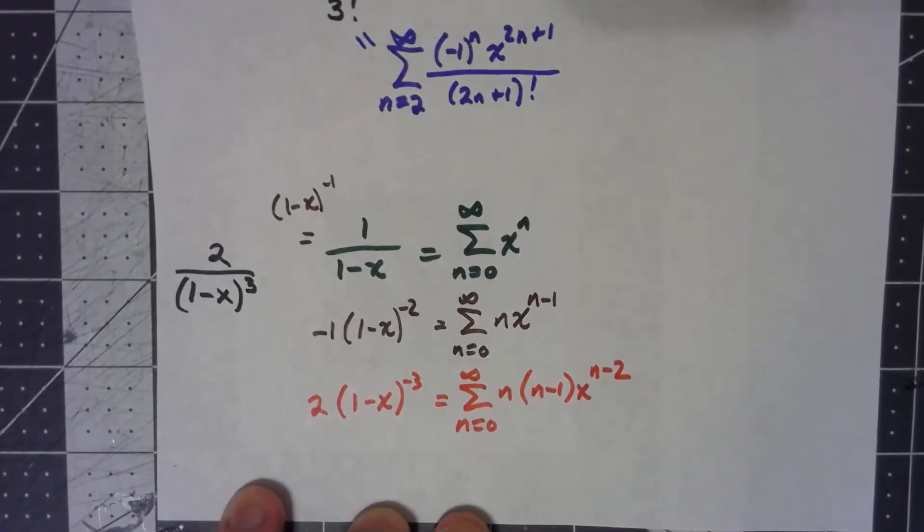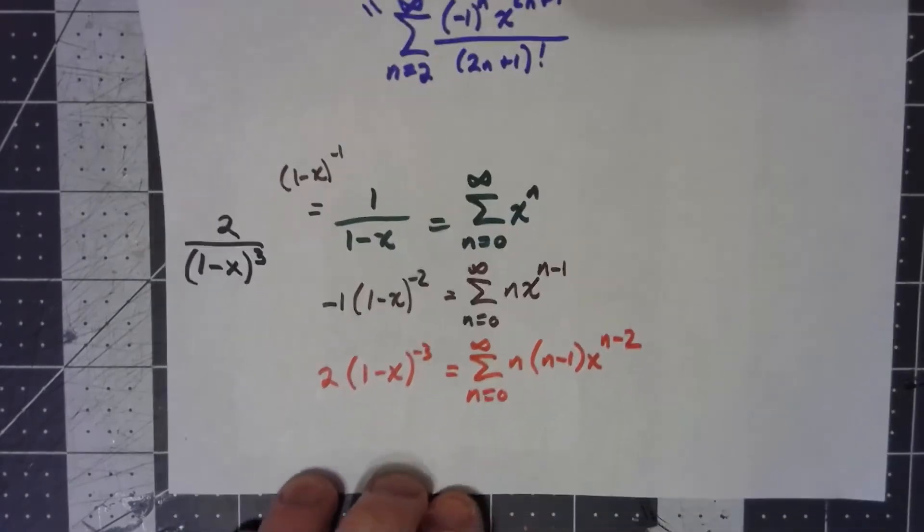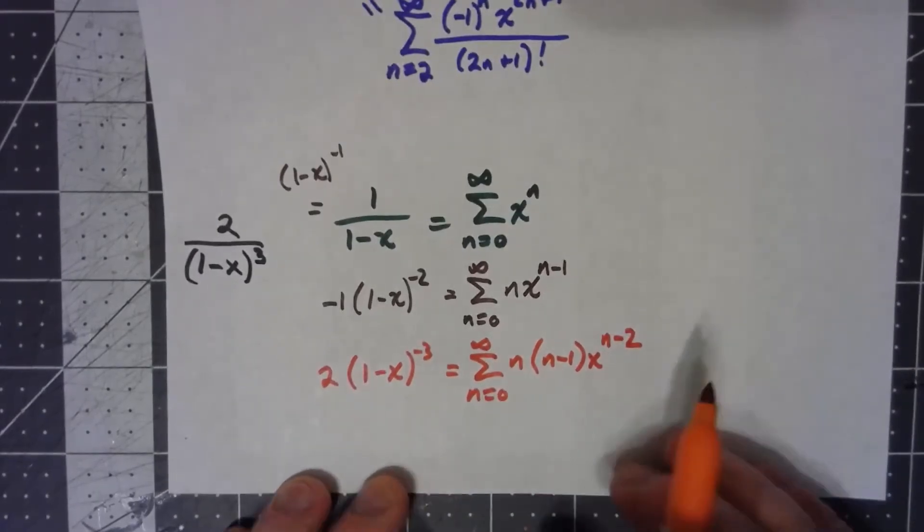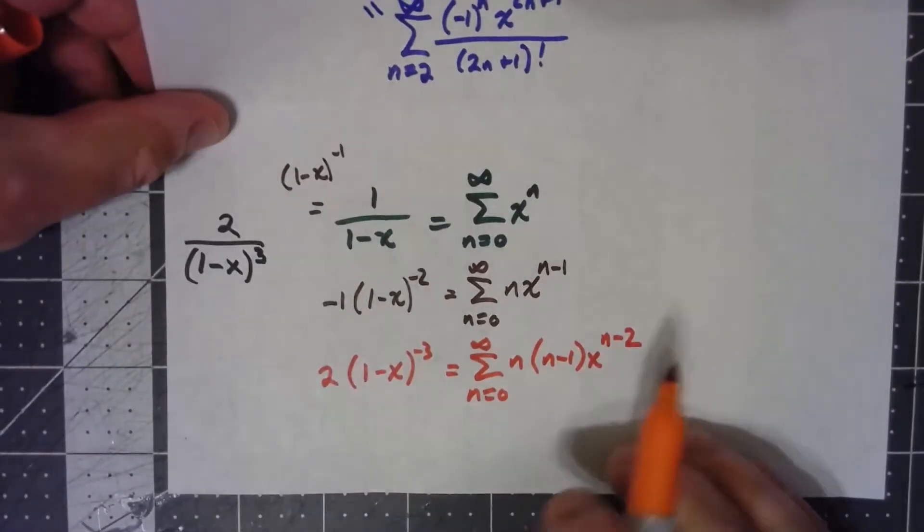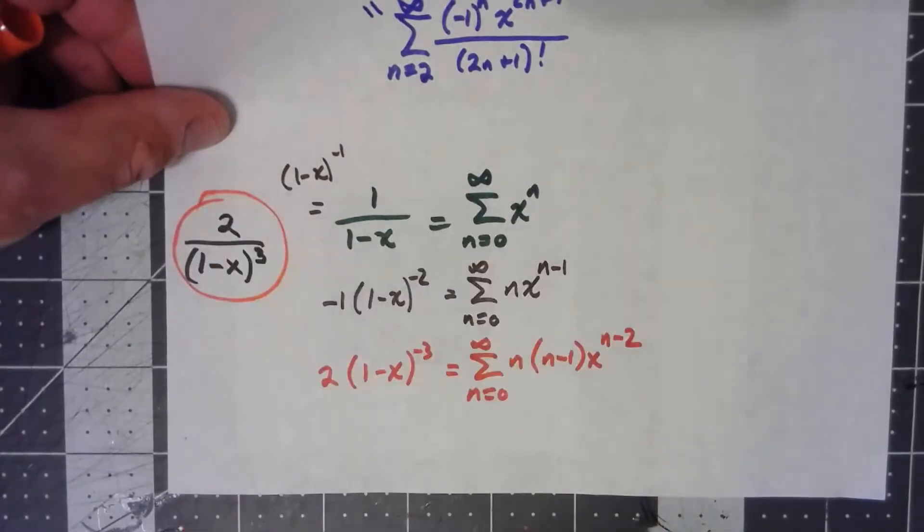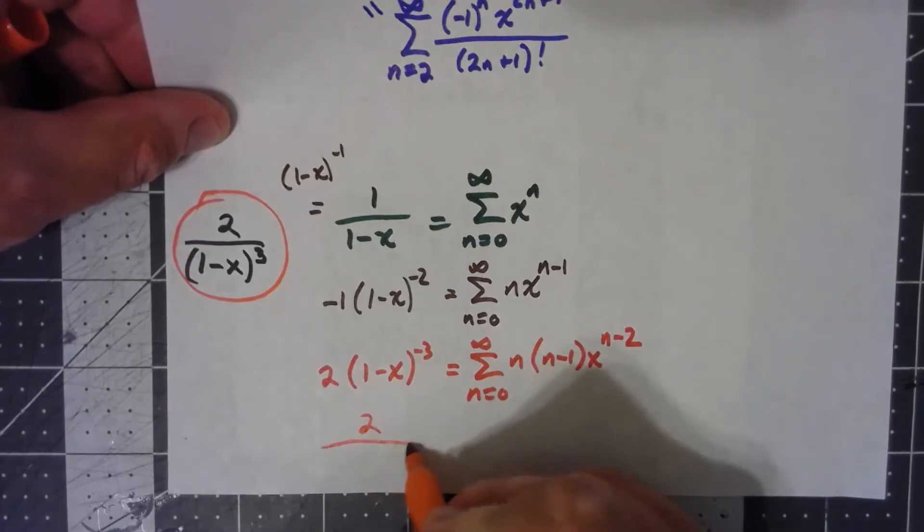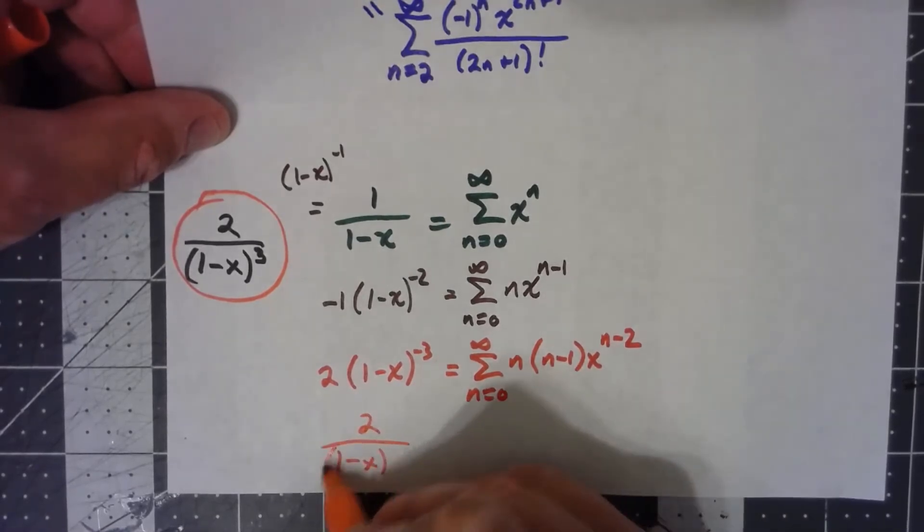And honestly, we're pretty much there, but there is some cleanup we can do here. So, first thing to notice is that this left thing here, 2 times 1 minus x to the negative 3rd, is the thing I'm looking for a power series for. So, this is 2 over 1 minus x cubed.